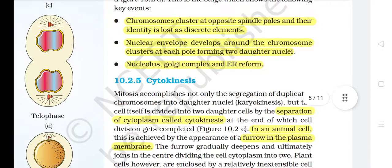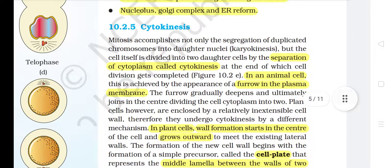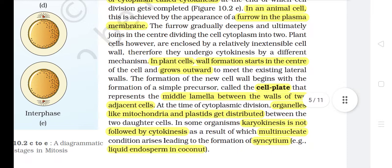10.2.5 Cytokinesis. Mitosis accomplishes not only the segregation of duplicated chromosomes into daughter nuclei (karyokinesis), but the cell itself is divided into two daughter cells by the separation of cytoplasm called cytokinesis, at the end of which cell division gets completed. In an animal cell, this is achieved by the appearance of a furrow in the plasma membrane. The furrow gradually deepens and ultimately joins in the center, dividing the cell cytoplasm into two. Plant cells, however, are enclosed by a relatively inextensible cell wall, and therefore undergo cytokinesis by a different mechanism.